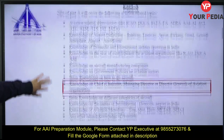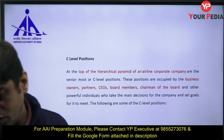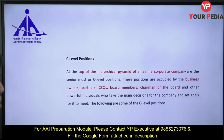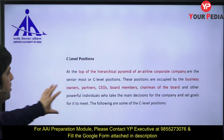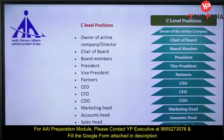There is a term called C-level positions. C-level positions are very high positions at the top of the hierarchical pyramid of an airline or corporate company. These positions are basically occupied by either the owner, business partners, owners of the company, CEO, chief executive officers, board members, chairman of the board, and such individuals. The board of directors or board of control handles these C-level positions.